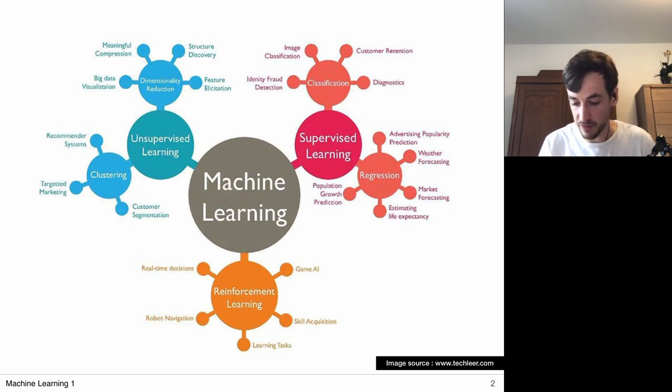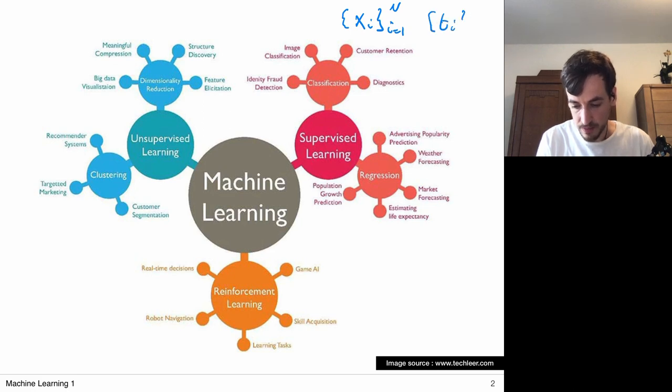And in a supervised learning setting, my experience or my data always comes in the form of input, a set of inputs and corresponding targets. So in supervised learning methods, I always have input-output pairs, input-target pairs.